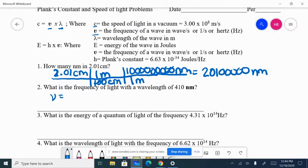So frequency is equal to the speed of light divided by the wavelength. Speed of light is 3 times 10 to the 8th meters per second.